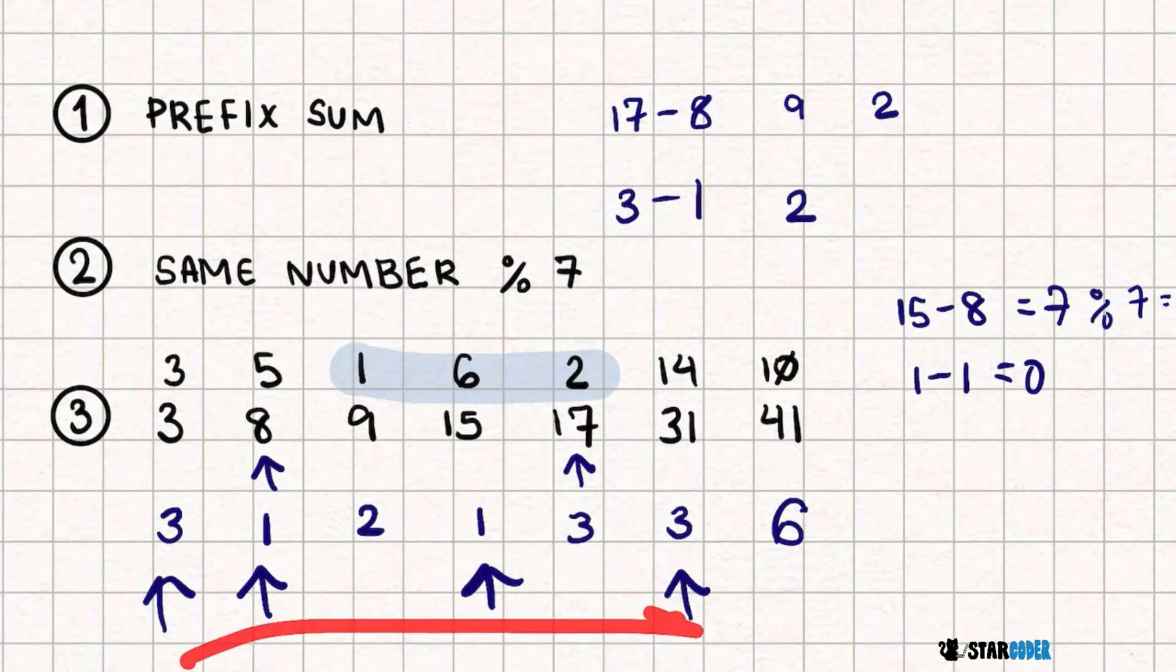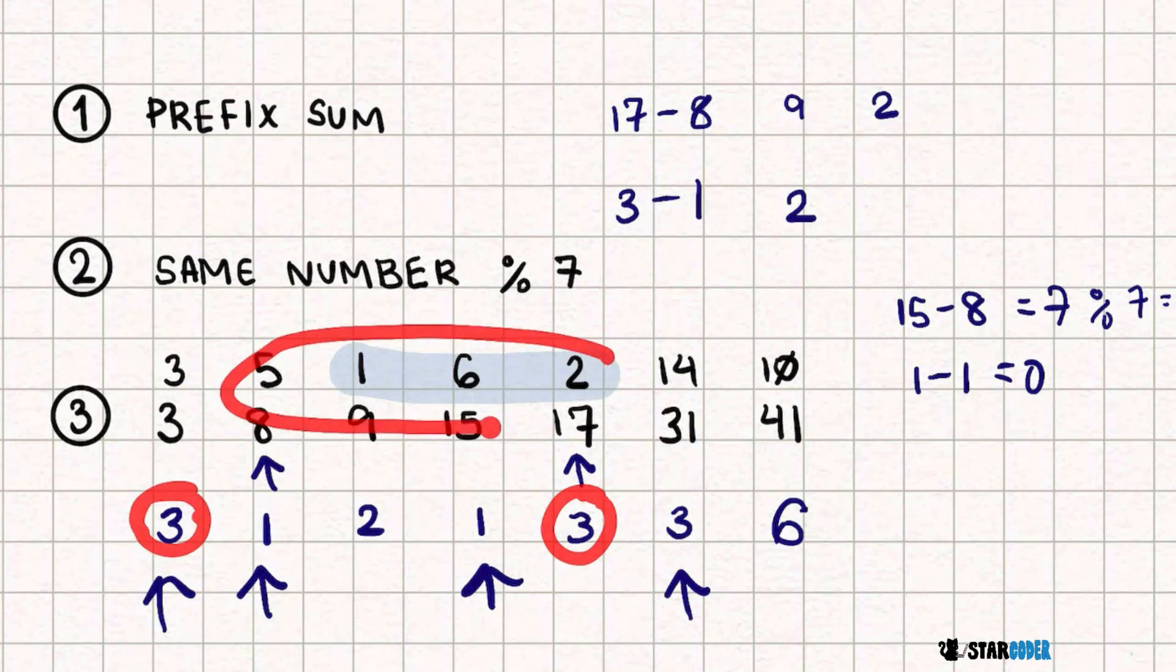So we're just going to loop through this list. And for any two values, we know that if it's the first occurring one, we're going to store it in our list because we know that it's the first occurring. And if we find one that's already been found, so let's say 3 here, we already found one here, we'll just make the answer the maximum of itself and the number of numbers here, since we know this is a valid range.